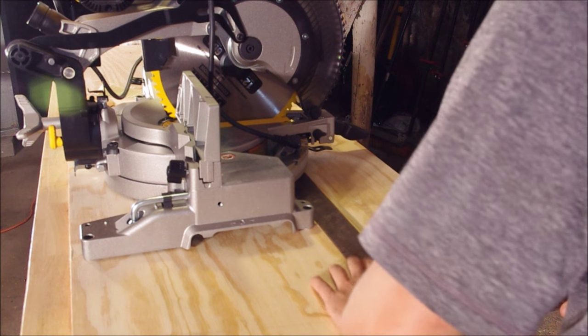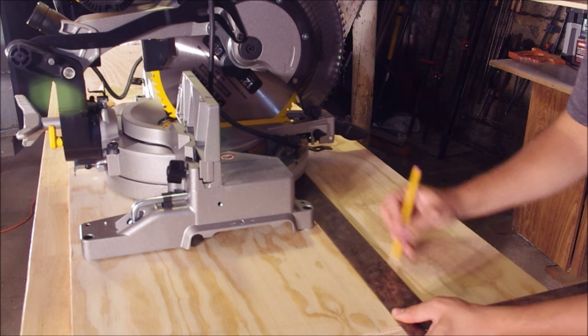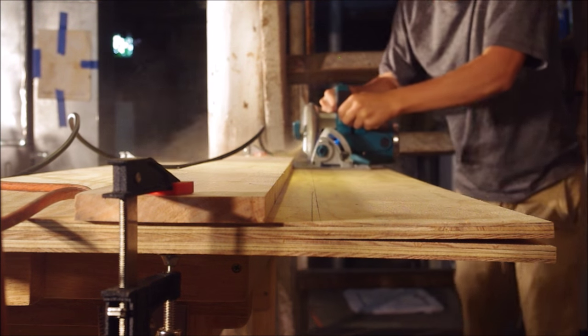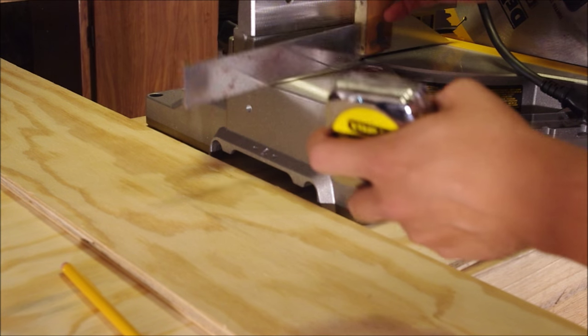Using your miter saw as a guide, figure out how wide it needs to be. Keep it at least one to two inches wider than the saw itself so you have something to screw into. Then set up your fence and make the cut along the length of this plywood.